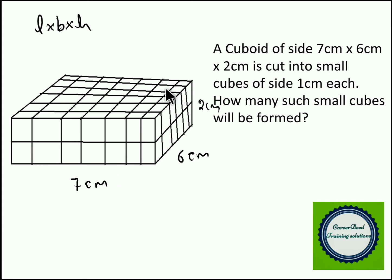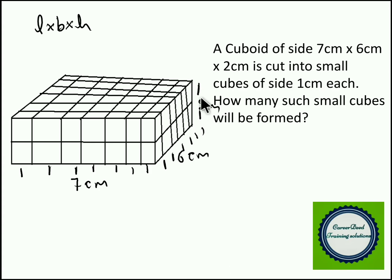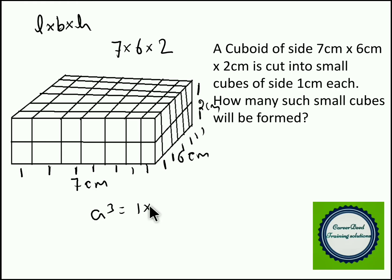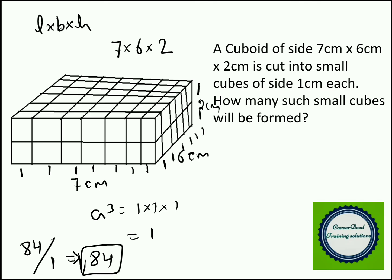You have to cut the 7 centimeter length 6 times to get seven 1-centimeter pieces. On the breadth you will get six 1-centimeter pieces. On the height it is only 2 centimeters, so you make only 1 cut to get two 1-centimeter pieces. The volume of this big cuboid is 7×6×2 = 84, and the volume of the small cube is 1×1×1 = 1. So 84 divided by 1 gives you 84 small cubes total.